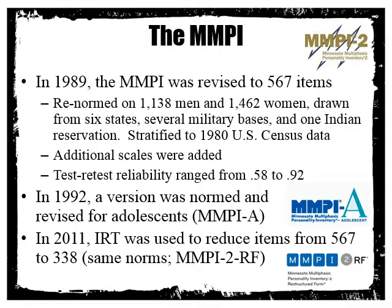In 1992, a version was normed and revised for adolescents using the same stratified sampling method. In 2011, they retained the same norm group but used item response theory, or IRT, to refine which items best represented each subscale. IRT helps determine how well an item discriminates between groups — for example, how well a question about sadness predicts whether someone is depressed. Items are either retained or discarded based on those predictions. This reduced the MMPI-2 Restructured Form to 338 items versus the original 567.